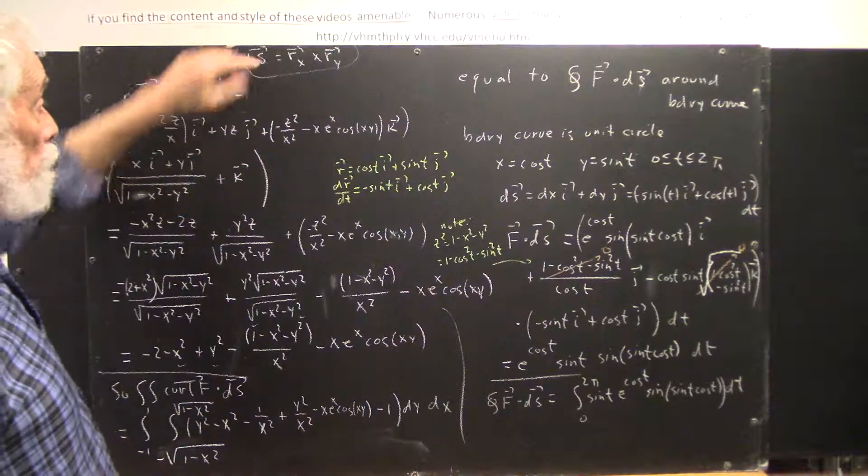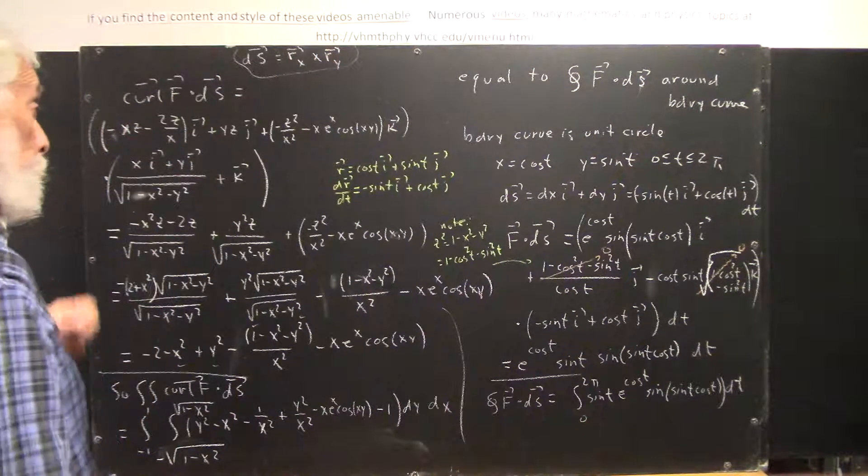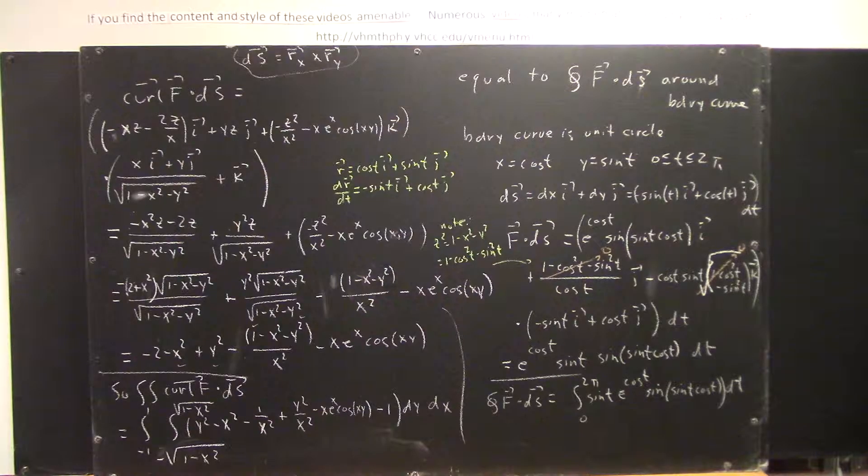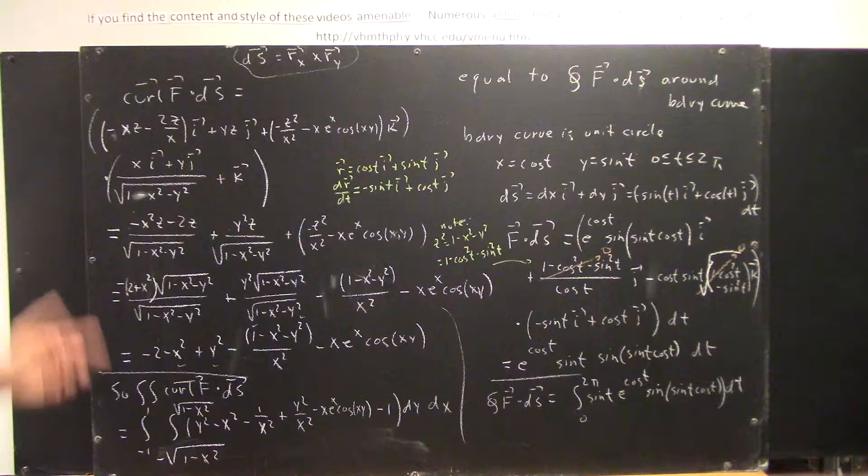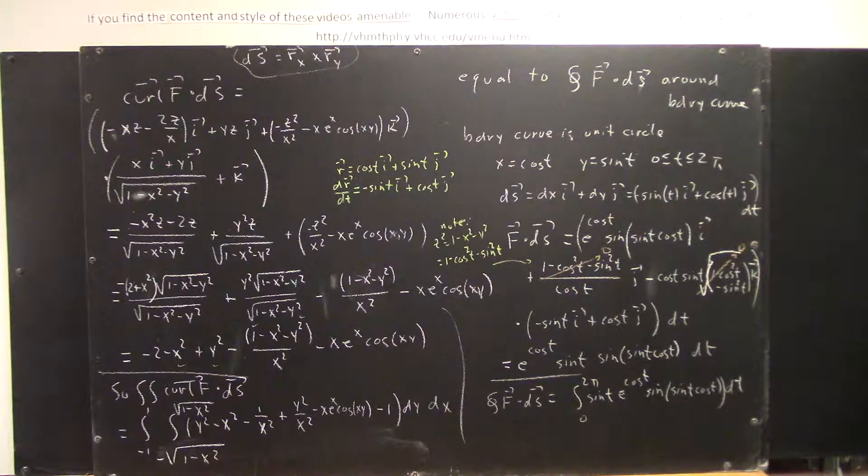Okay, this is what we get from our rx cross ry. So, we do the dot product of curl of f with ds,